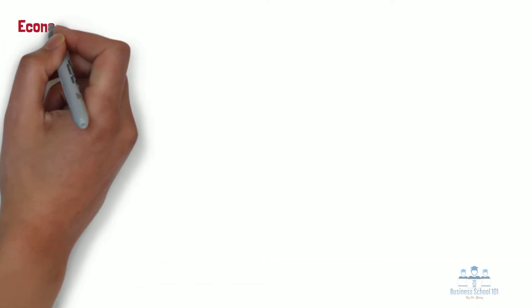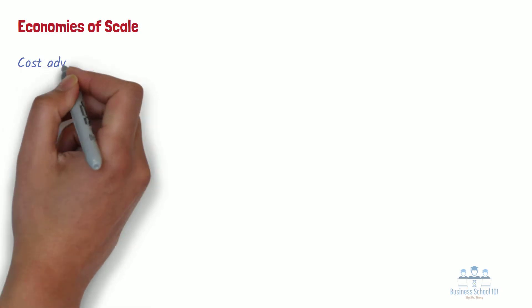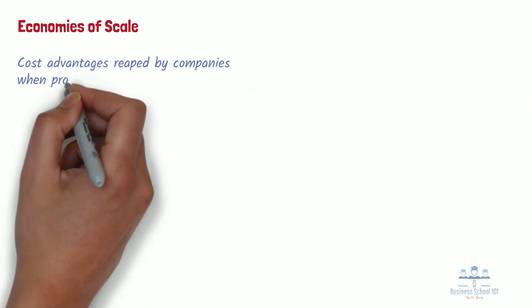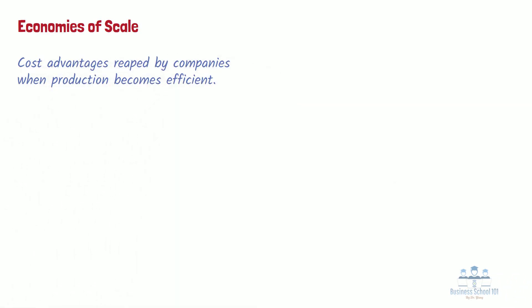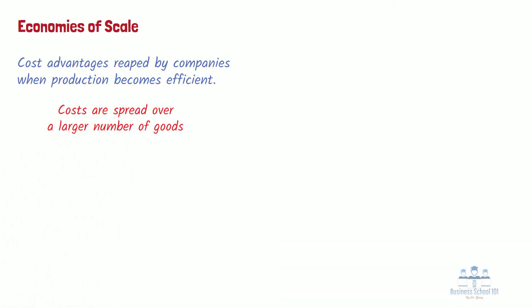Second, economies of scale. Economies of scale are cost advantages reaped by companies when production becomes efficient. Companies can achieve economies of scale by increasing production and lowering costs. This happens because costs are spread over a large number of goods. Costs can be both fixed and variable.